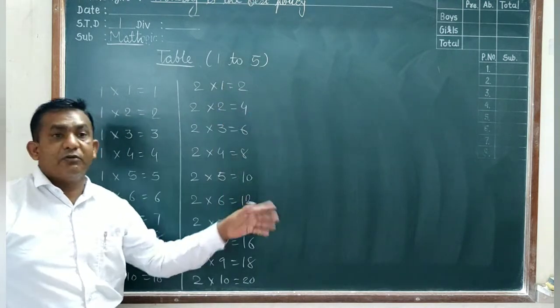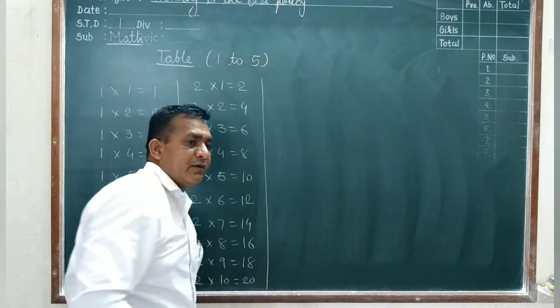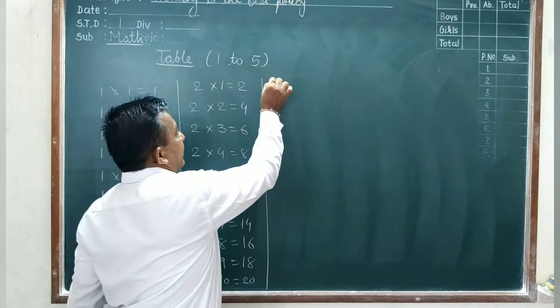We need the table to find the product. Also you learn the table more than 5, but today we learn only 5.